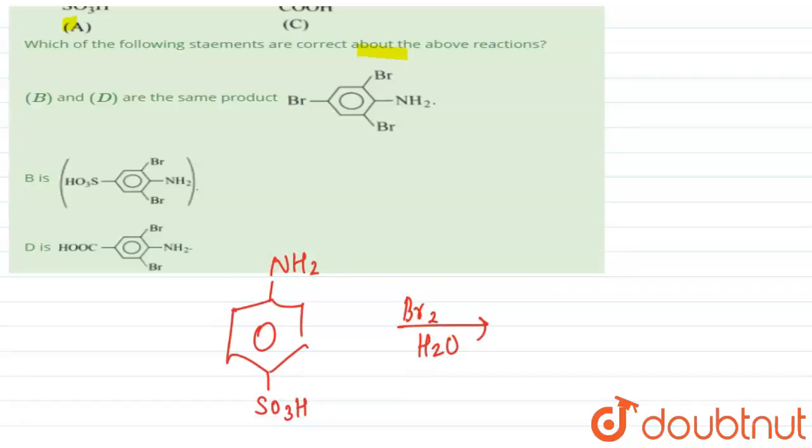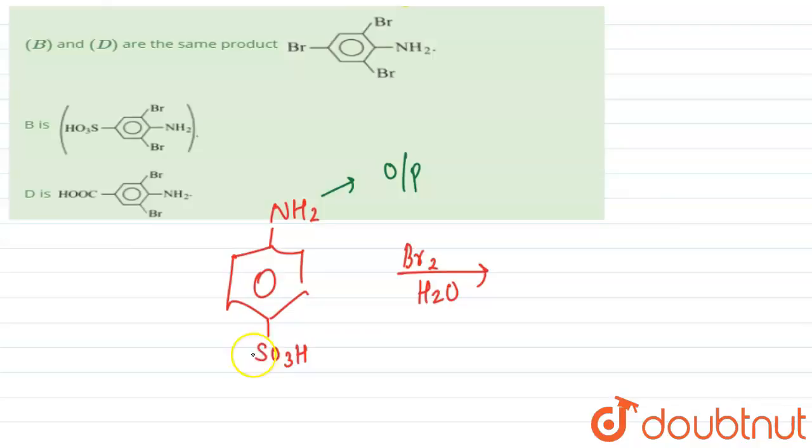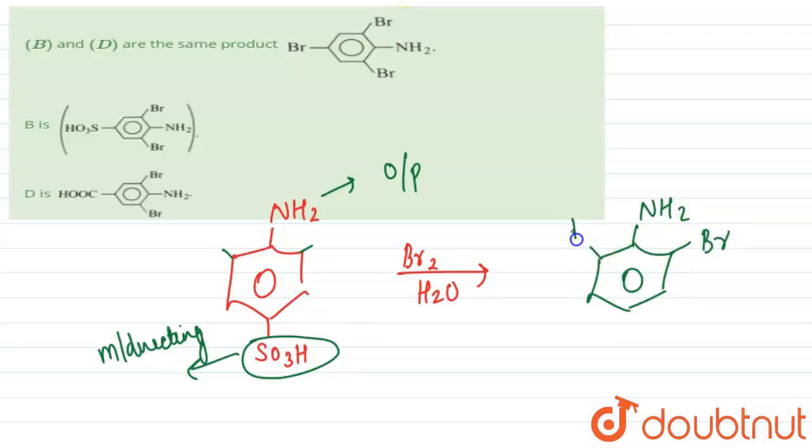In this case, amine is an ortho-para directing group while the sulfonic group is meta-directing. So two bromines will attack here, and one bromine will remove this sulfonic group such that we will get this product - two bromines on its ortho positions and one on its para position.